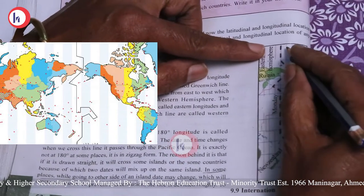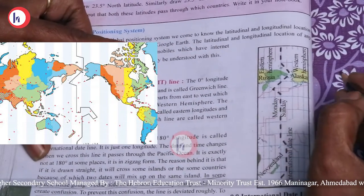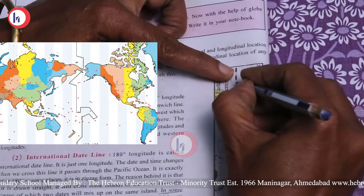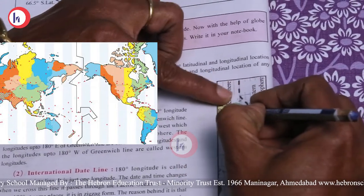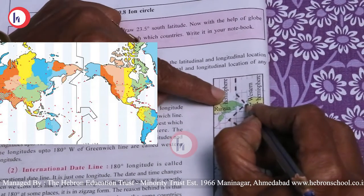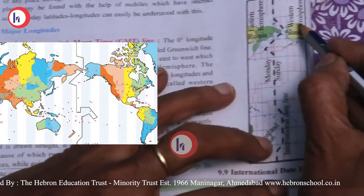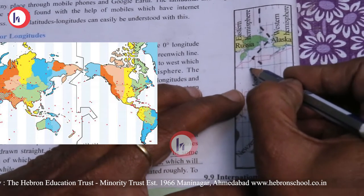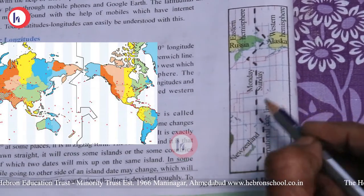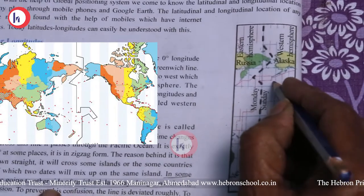Why is the International Date Line in zigzag form? If it were drawn straight, it would cross some islands or countries, causing two dates to mix up on the same island — for example, in Russia it would cause a date change within the same country. When we move from the Western Hemisphere to the Eastern Hemisphere, one day is extended, and when we move from the Eastern to the Western Hemisphere, one day is deducted. To prevent this confusion, the line is deviated and drawn on the sea, not on land.